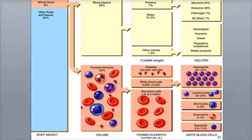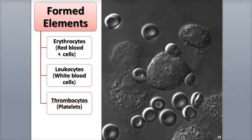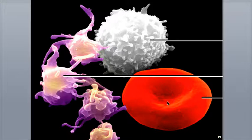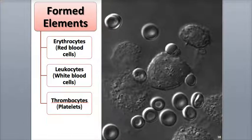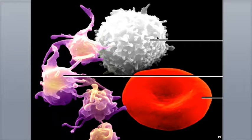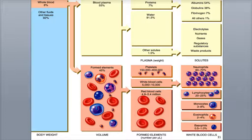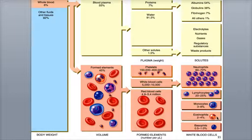The formed elements include the three major blood cells: the red blood cells, white blood cells, and platelets. The red blood cells, also called erythrocytes, transport oxygen from the lungs to the body cells and carbon dioxide from the body cells back to the lungs. The white blood cells, or leukocytes, are the body's immune system defenders and include neutrophils (60–70%), lymphocytes (20–25%), monocytes (3–8%), eosinophils (2–4%), and basophils (0.5–1%), which are the least abundant.